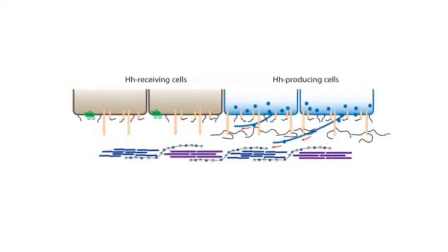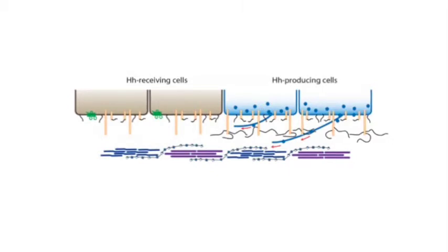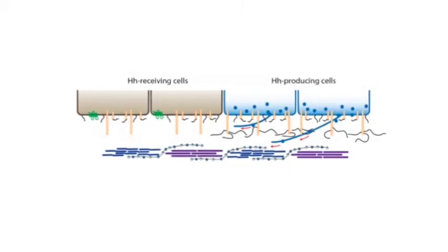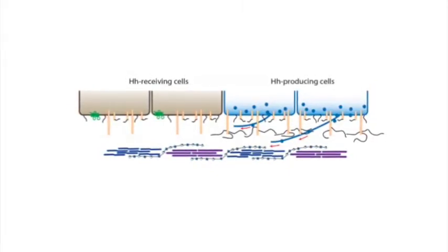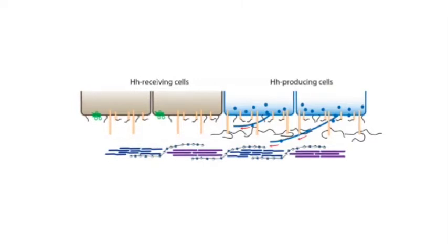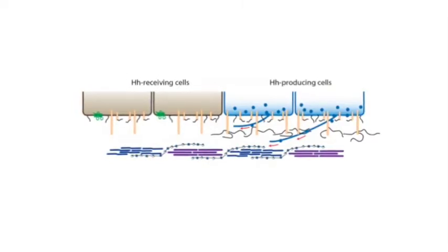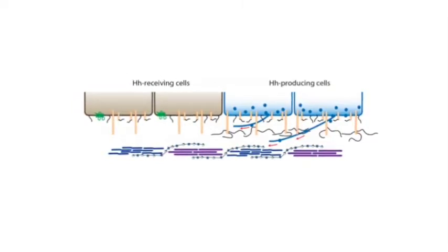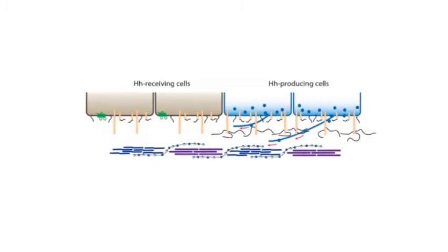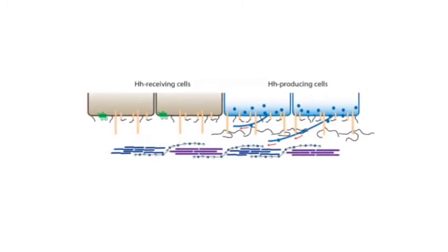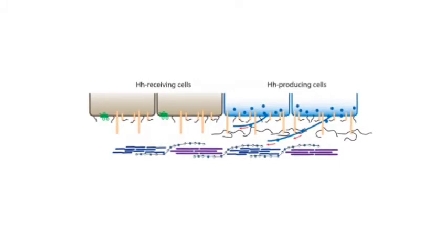This finding suggests that the essential role of the HSPGs for hedgehog signaling in the wing disc is to provide a substrate for the cytonyms that track over the surface of the disc cells. These results also suggest that the cytonym-mediated signaling can explain many of the experimental observations that were interpreted to support diffusion-based mechanism of signal transfer.